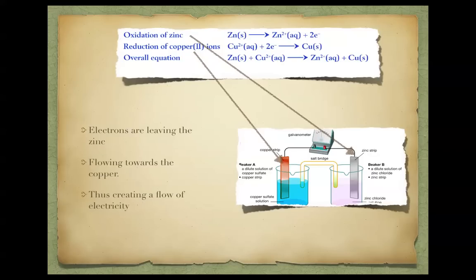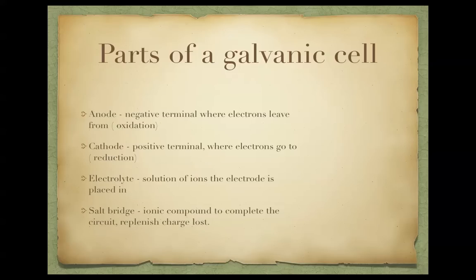We have the overall equation, and we've talked about making overall equations. So the parts of our galvanic cell: we have an anode, the negative terminal where electrons leave from — that's where oxidation happens. We have a cathode, the positive terminal where electrons go to — that's where reduction happens. So reduction is happening at the cathode.